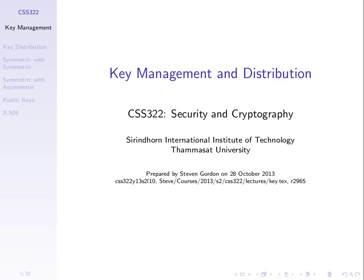We've talked about two different types of cryptography. We've looked at symmetric key cryptography, where we have a shared secret key. Both entities, A and B, must have the same key. One encrypts with the key, and the other can only successfully decrypt if they have the same key.